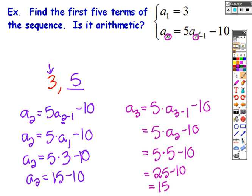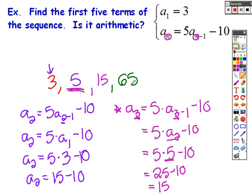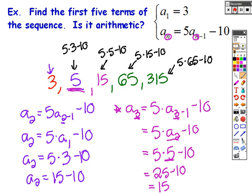To find the third term, I plug in 3 for n: 5 times a sub 2 minus 10. A sub 2 is the term I just found — that's 5. So 5 times 5 minus 10 gives 15. Then 15 times 5 is 75, minus 10 gives 65. And to find the fifth term, 65 times 5 is 325, minus 10 gives 315. So the first five terms are 3, 5, 15, 65, 315.